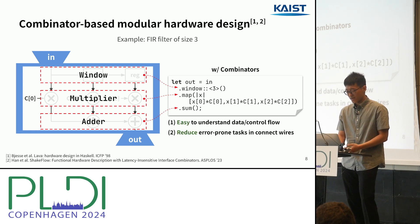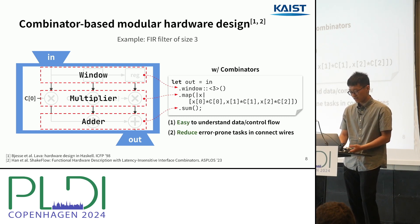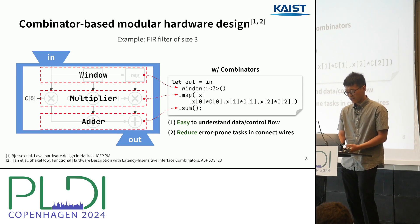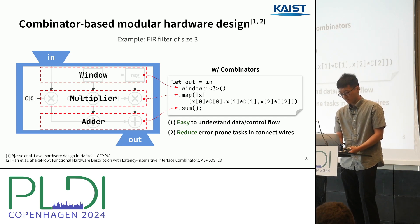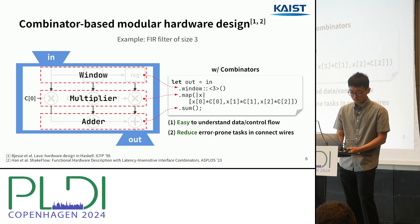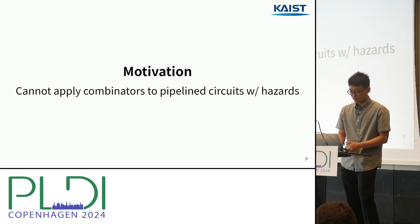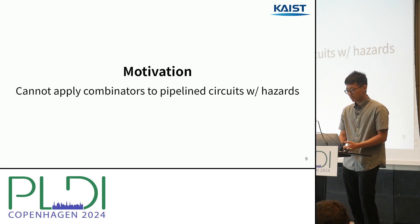As you can see, you can modularily construct the FIR filter from its sub-components by just chaining the combinators. It makes it easy to understand the data and control flow, and also reduces error-prone tasks in connecting wires. So combinators are good, but their applications are severely limited to simple circuits.